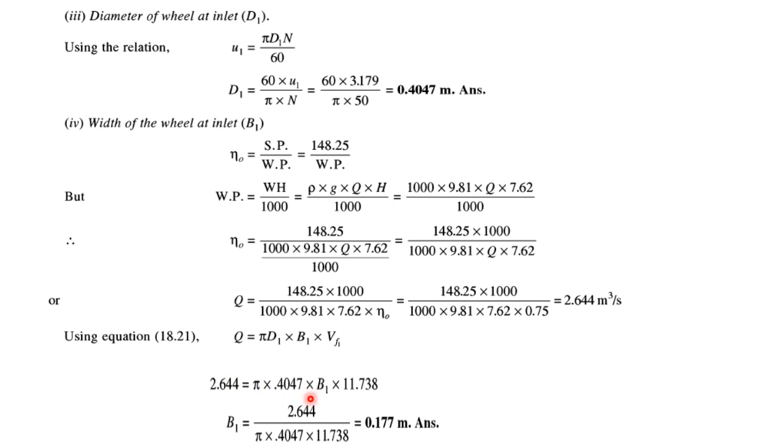All these values are given: Vf1, D1, Q, and π are known. So you can find out the value of width of the turbine B1, that comes to 0.177 meters. Thank you.